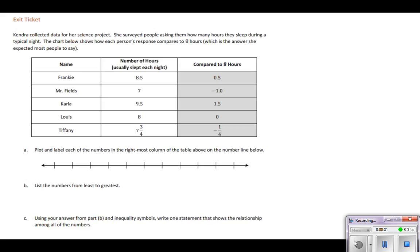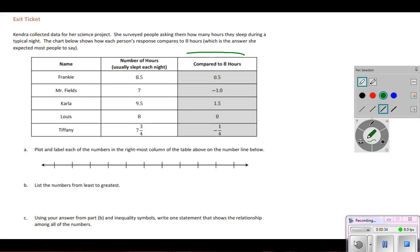So we're focusing in on this part of the chart here. It says plot and label each of the numbers in the rightmost column of the table above on the number line below. So when we're taking a look here, I want to analyze the data that I have. I've got positive and I have negative numbers and I have increments of 0.5 and quarters.